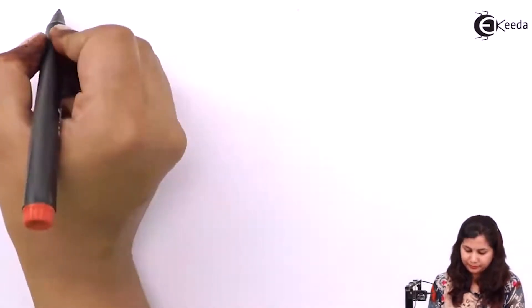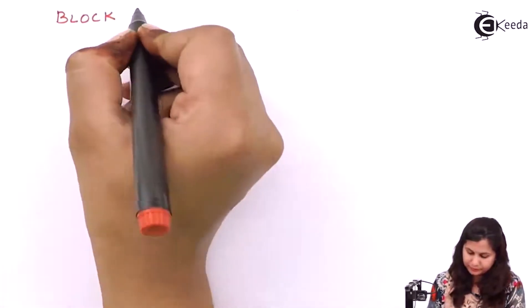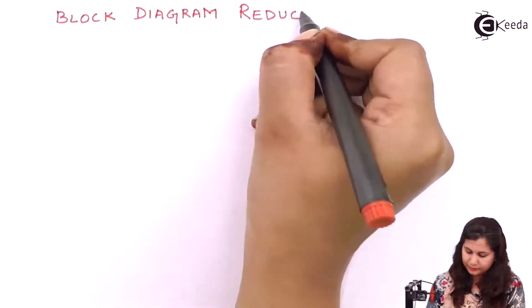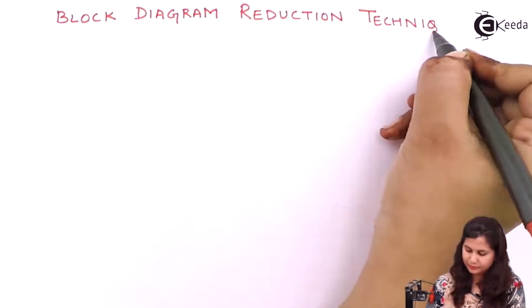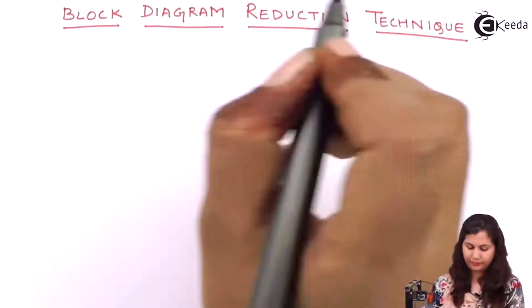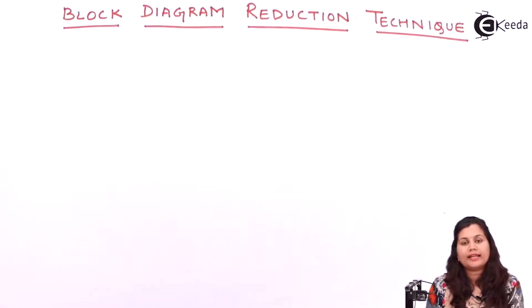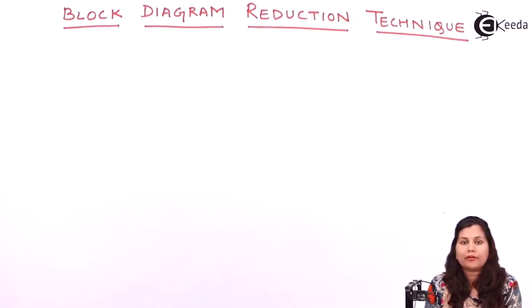Hello friends. In this video we are going to study how we can determine a transfer function using a block diagram reduction technique. A complicated block diagram may consist of many loops and these loops are interconnected with each other, and a block diagram can also have many number of feedback loops.